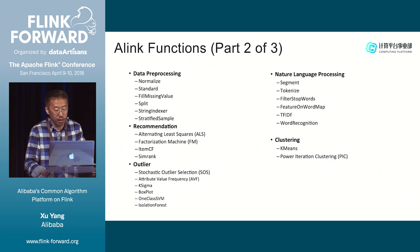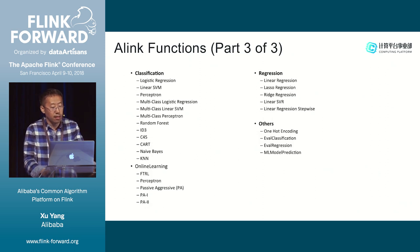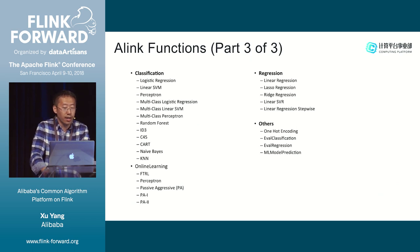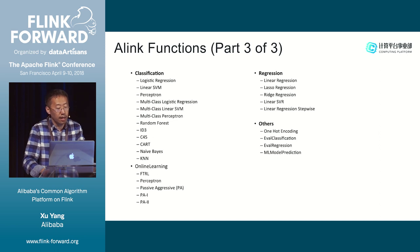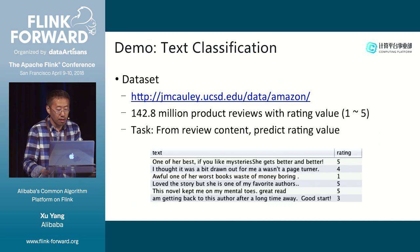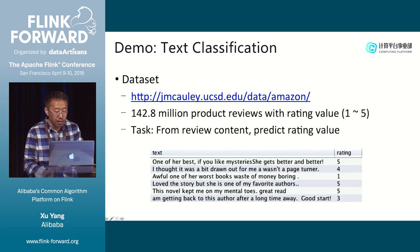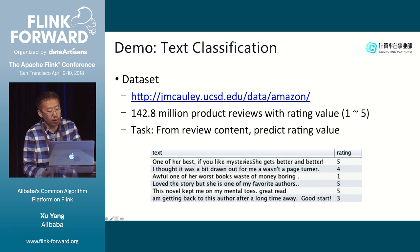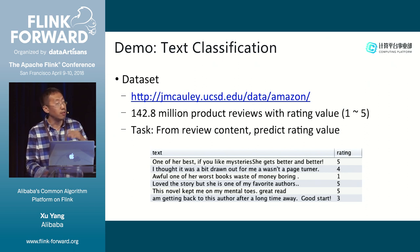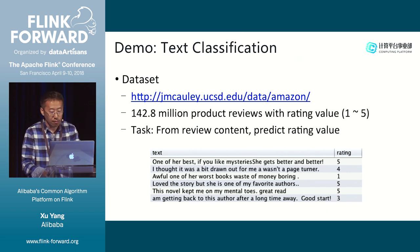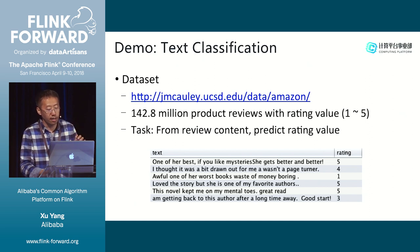We also provide two clustering algorithms. The third part is about classification and regression. We also provide the online learning method. I'd like to give a demo for text classification using product reviews. From the reviews, we can get a rating value from one to five — one being very bad and five being very good. We want to build a model that, given only the review text, can predict the rating.